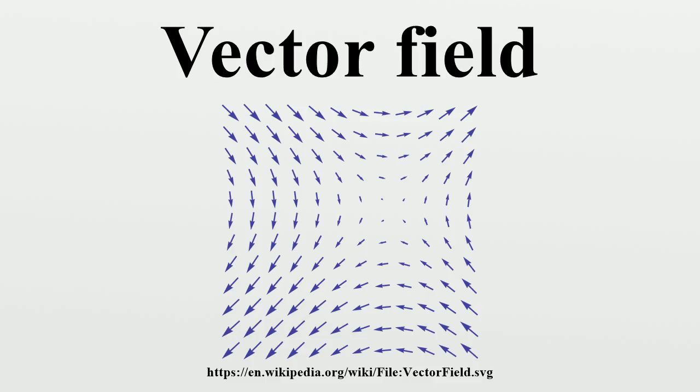Flow curves: Consider the flow of a fluid through a region of space. At any given time, any point of the fluid has a particular velocity associated with it, thus there is a vector field associated to any flow. The converse is also true. It is possible to associate a flow to a vector field having that vector field as its velocity.